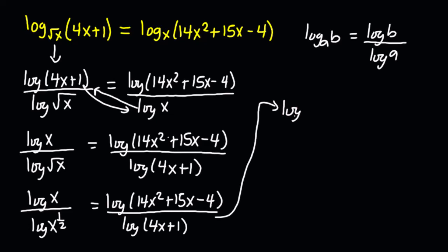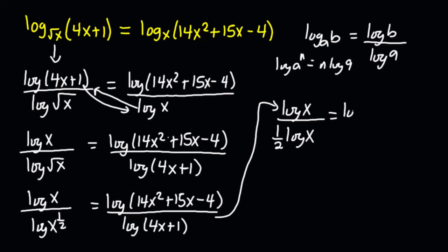The left hand side is the same as log of X divided by half of log X, because generally if we have log of a to the exponent n, that is the same as n·log a. So log X to the exponent 1/2 is the same as (1/2)·log X.